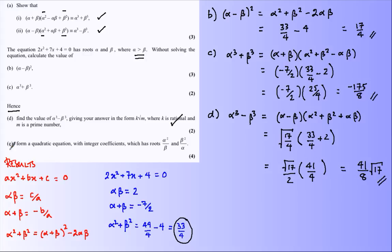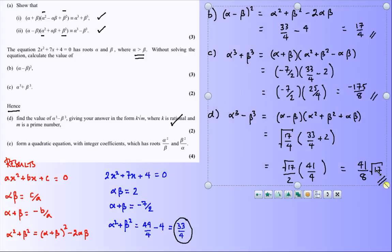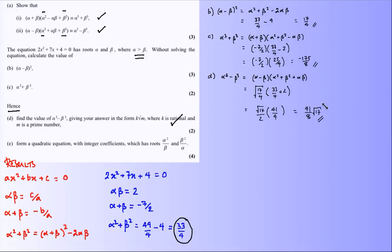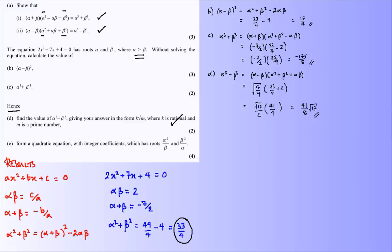And finally, form a quadratic. Well I can form the quadratic as long as I know what the sum of the roots and what the product of the roots are. Let me shrink that down a bit, give myself a bit of room. And for this final bit then, for part E, the quadratic I want.